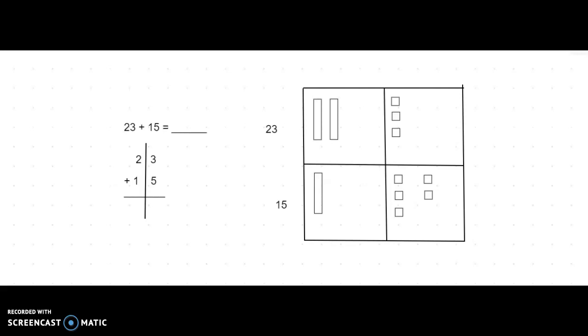So in class we often use pictures, which is what I'm using today on this whiteboard. It's my first time using it, please be patient with me. This example will not need regrouping. We are using the example 23 plus 15. So the first thing you should do if you have a problem that looks like this, it's horizontal, you should set it up as a vertical addition problem.